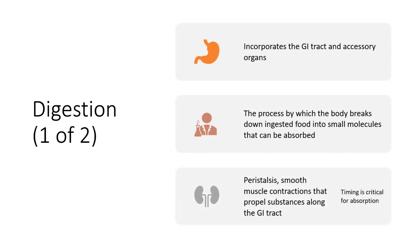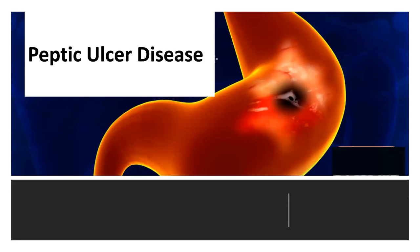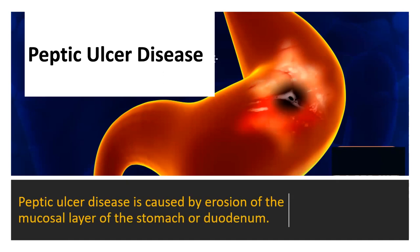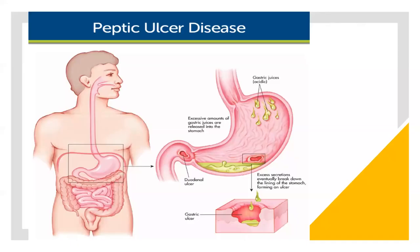The timing is critical for absorption. Peptic ulcer disease is caused by the erosion of the mucosal layer of the stomach or the duodenum. The mechanism: gastric acid juices are acidic in nature. When an excessive amount of gastric juices are released into the stomach, it causes excess secretions, breakdown of the lining of the stomach, and forms the ulcer. Duodenal ulcers form in the same way.